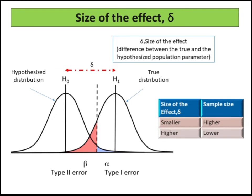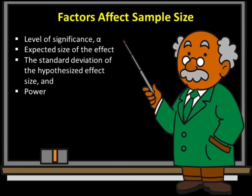For a fixed level of alpha equals 0.05 and power of 0.95, reducing the difference from 5 to 1 will increase the sample size from 8 to 157. There are 4 factors that affect the sample size: level of significance alpha, expected size of the effect, the standard deviation of the hypothesized effect size, and power.